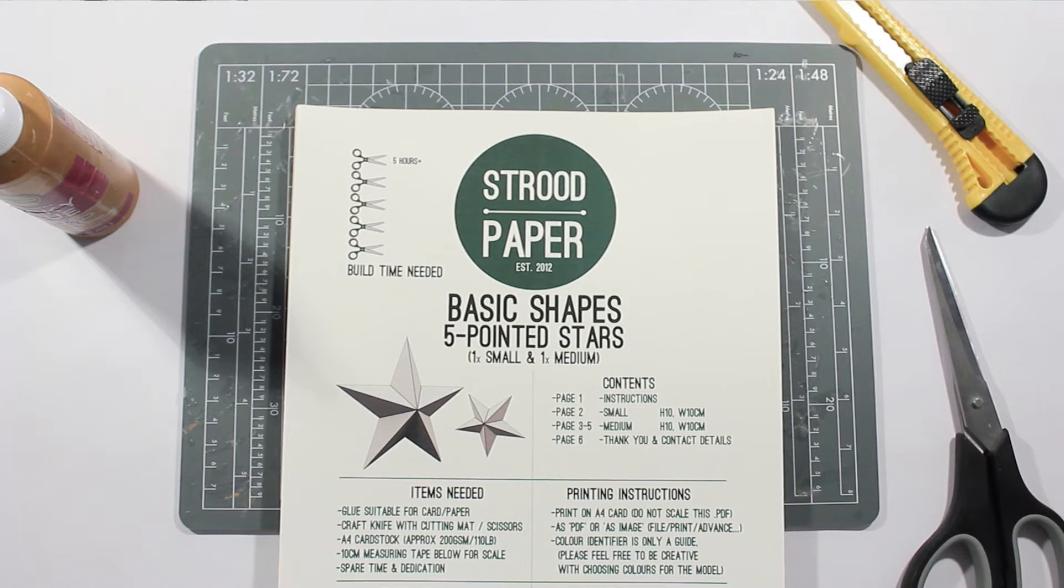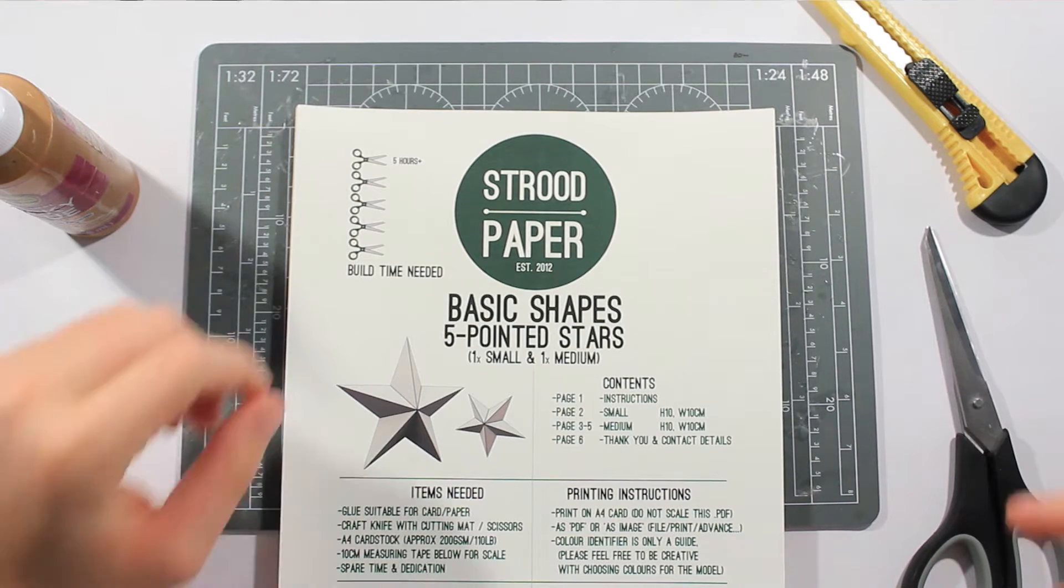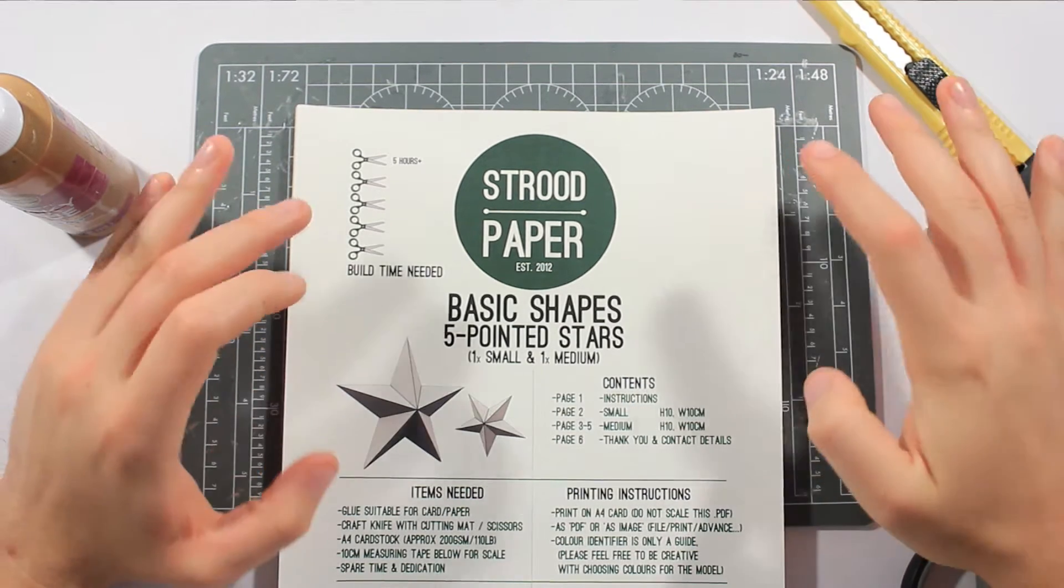Hello and welcome to this episode of Strew Paper. This time we're going to make five-pointed stars. These are really easy.